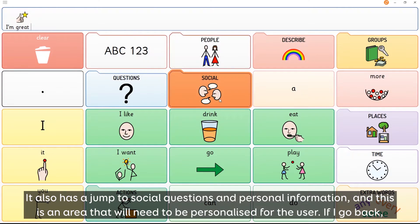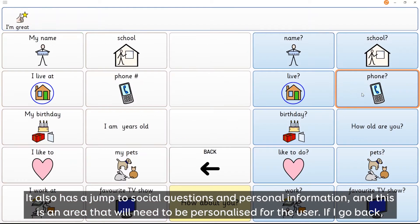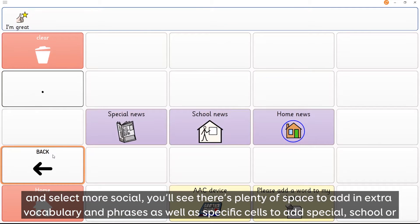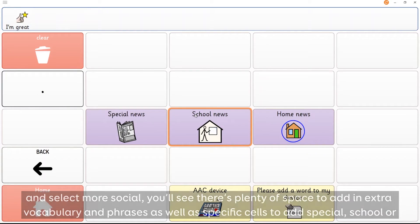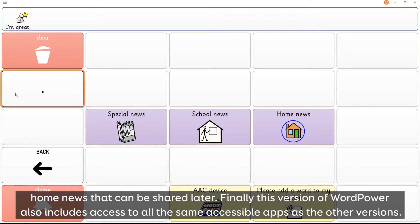It also has a jump to social questions and personal information and this is an area that will need to be personalized for the user. If I go back and select more social you'll see there's plenty of space to add in extra vocabulary and phrases as well as specific cells to add special school or home news that can be shared later.